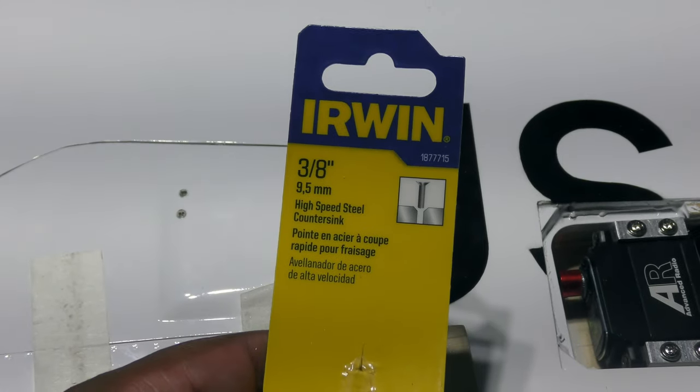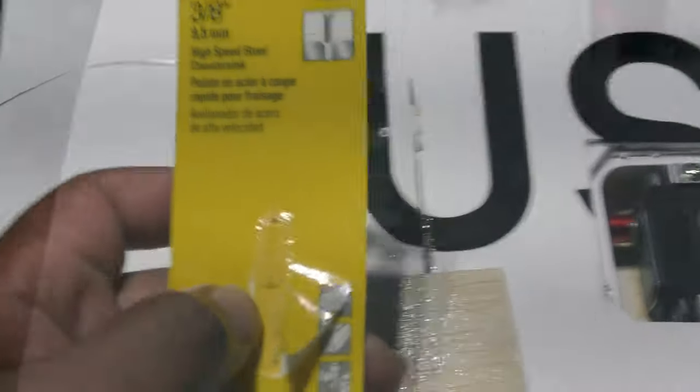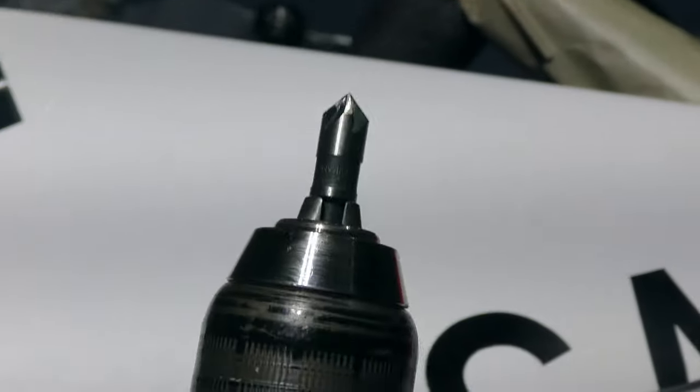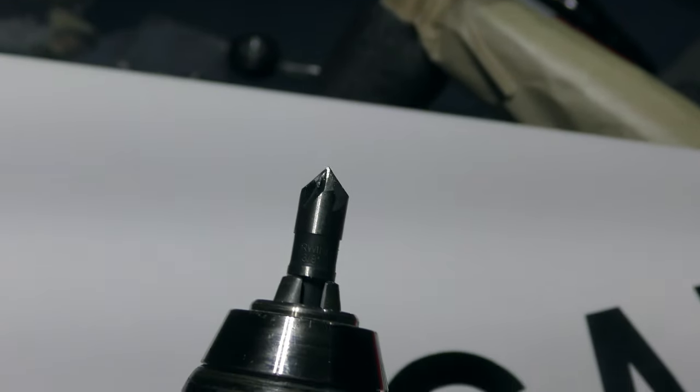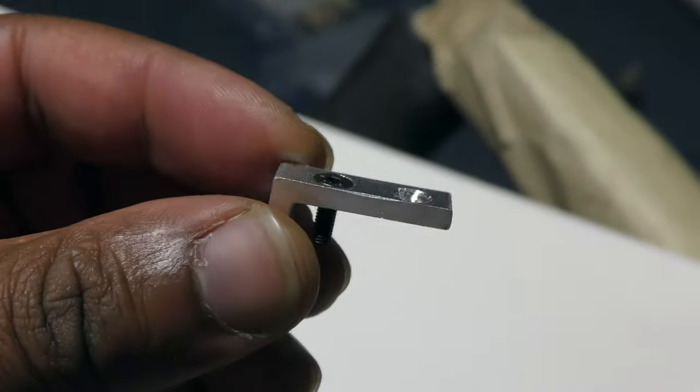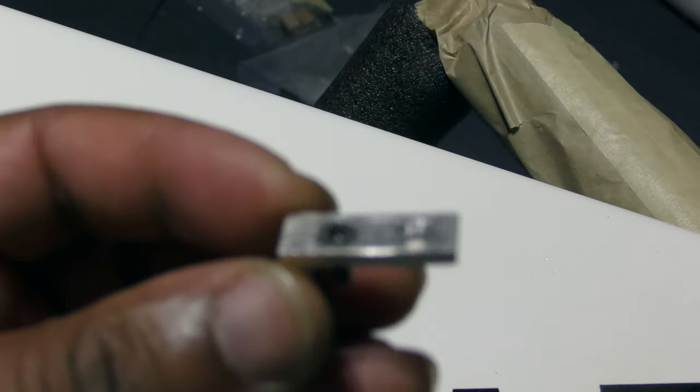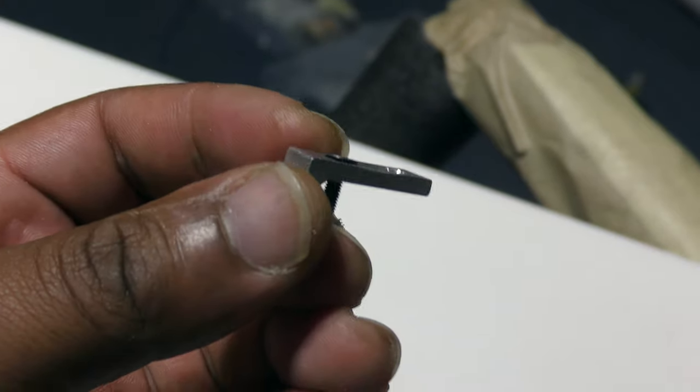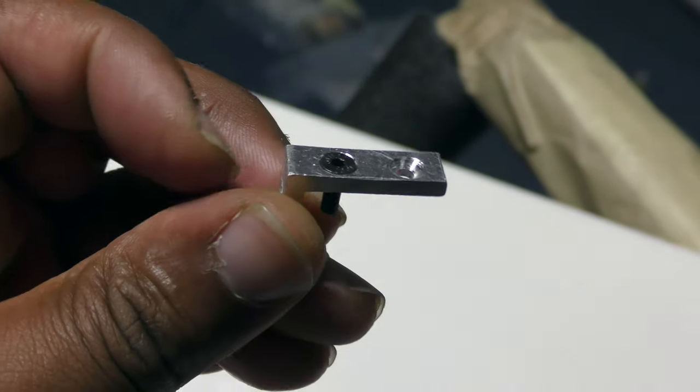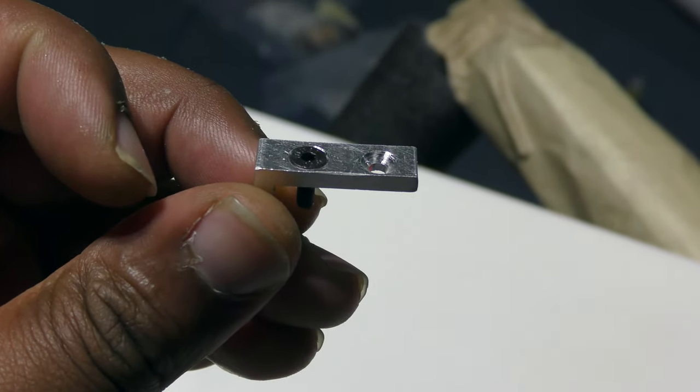This guy, which is an Erwin high-speed countersink bit, so that looks like this. And with that I was able to countersink the holes, so basically what it looks like now is that. And I got myself some screws, I'm just gonna get some wood screws that have that countersink in them and that way they'll be nice and flush. So we'll see how that works.